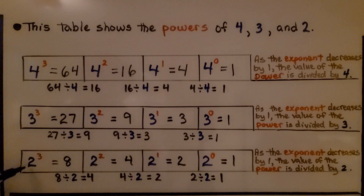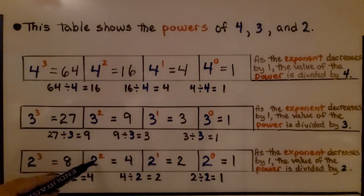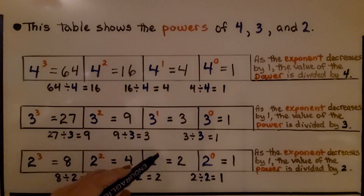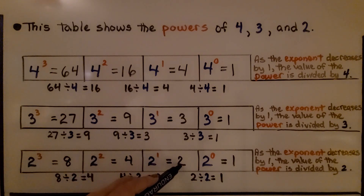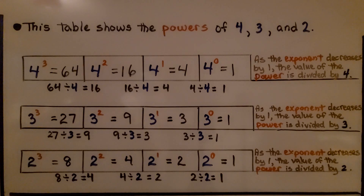And here we have 2 to the third power, that's 2 times 2 times 2, that's equal to 8. 2 times 2 is 4. 2 to the first power is equal to 2. And 2 to the 0 power is equal to 1. As the exponent decreases by 1, the value of the power is divided by 2.